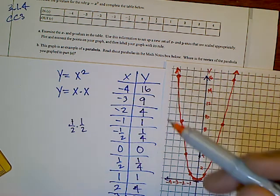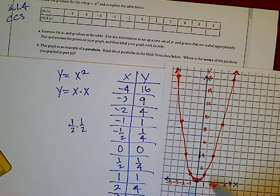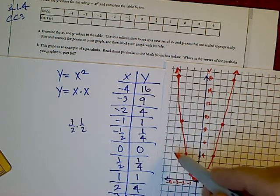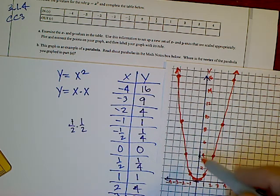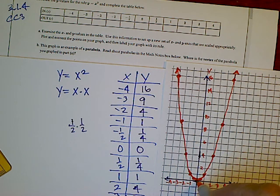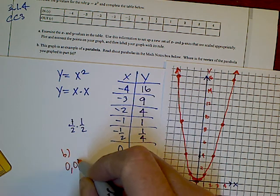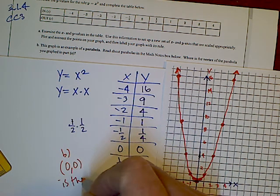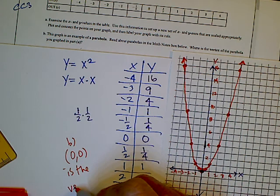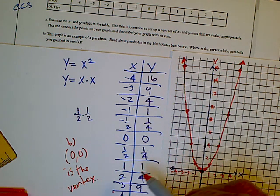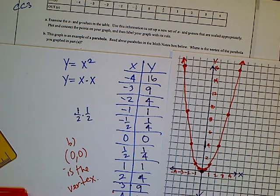Where is the vertex? Well, if you read the Math Notes, the vertex is either the very top or the very bottom of the parabola. In this case, since the parabola is shaped upward, we have this U shape upward. The very bottom of that parabola is right here at 0, 0. So for part B, I would say 0, 0 is the vertex.